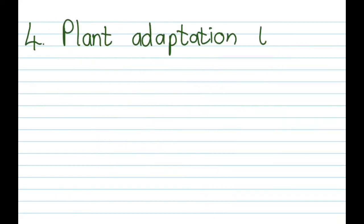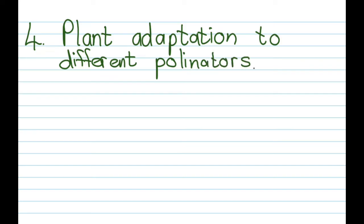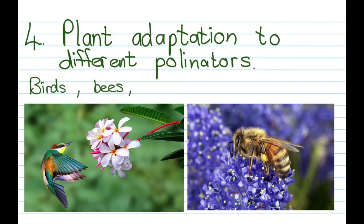The fourth one is that they sometimes make use of different pollinators — now remember, this is the plant one. Birds, bees, butterflies, and bats are all different types of pollinators. Certain plants will only be pollinated by birds and certain plants will only be pollinated by bees, so that prevents them from being pollinated by another species.